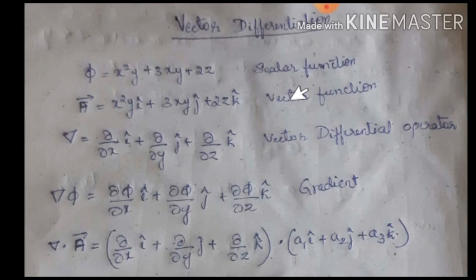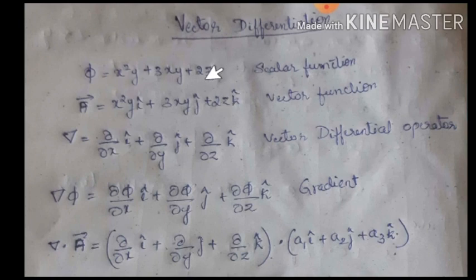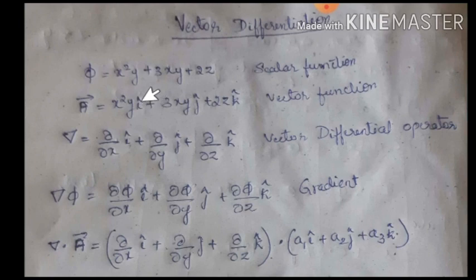Next is vector function. A vector function, written as F vector, takes the form: x squared y times i cap plus 3xy j cap plus 2z k cap. Observe the difference: a scalar is a magnitude with no direction, so i, j, k axis terms are absent. A vector has both magnitude and direction — i cap along x-axis, j cap along y-axis, k cap along z-axis. So i, j, k terms will not appear in a scalar function.